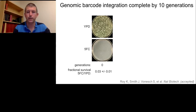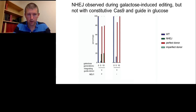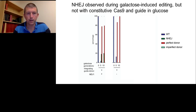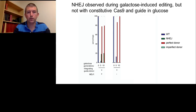We found that while editing in galactose produces high levels of precision editing — up to 80% in the presence of NHEJ, pushed to 100% in its absence — when editing is done in glucose with constitutive Cas9, we were surprised to find that NHEJ was not observed whether or not NEJ1 is present. This indicates that the metabolic state of the cell and the precise conditions under which Cas9 and the guide are induced can have a profound impact on the editing process itself.